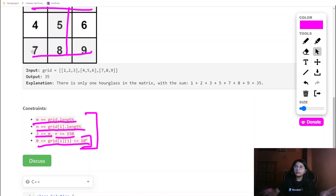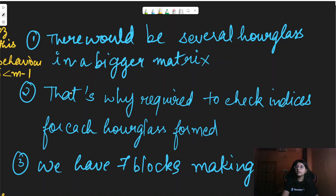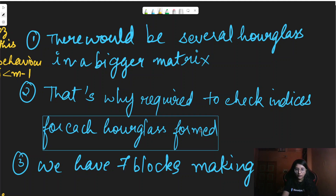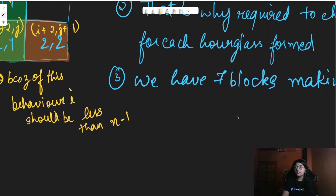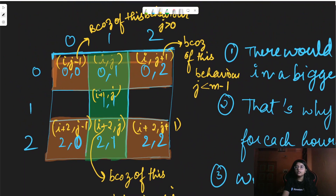Now let us build the intuition for solving this question. There will be several hourglasses in a bigger matrix, so we are required to check the indices for each hourglass formed. An hourglass has basically seven blocks: one, two, three, four, five, six, seven.